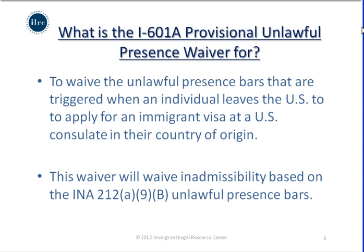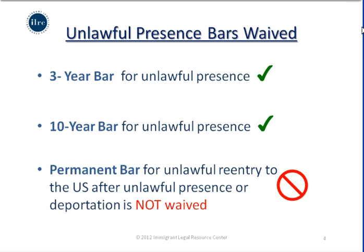The I-601A Provisional Unlawful Presence Waiver is to waive the unlawful presence bars that are triggered when an individual leaves the U.S. to apply for an immigrant visa at a U.S. consulate in their country of origin. This waiver addresses the 3-year and 10-year bars under the INA, but does not waive the permanent bar for unlawful reentry after unlawful presence or deportation.